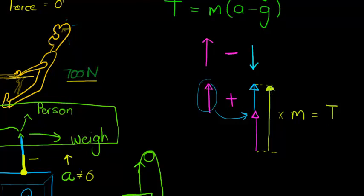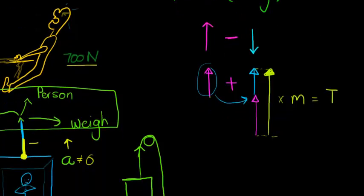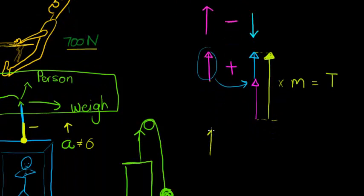The tension is now quite large because the upward acceleration is in the opposite direction of the downward gravitational acceleration. When something is being pulled up with an acceleration, the tension in the cable will be more than when it's just at rest. That should make intuitive sense.